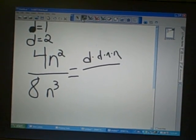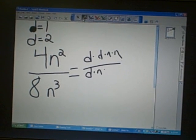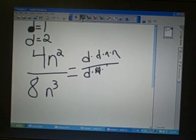Next we simplify 8n cubed to half note times half note times half note times n times n.